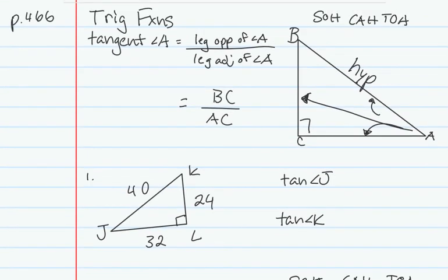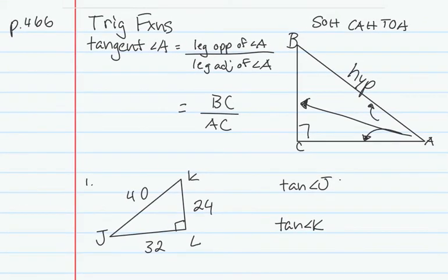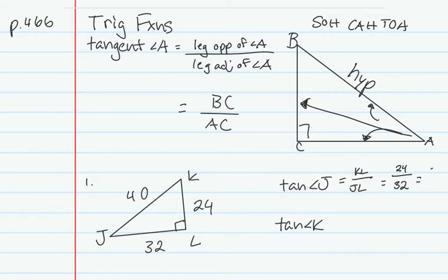The first problem we're going to look at is just the tangent of angle J — setting up the ratios and reducing them to nice fractions. The leg opposite of angle J is KL, and the leg adjacent is JL. KL equals 24 and JL equals 32, which reduces to 3/4, or 0.75 as a decimal.